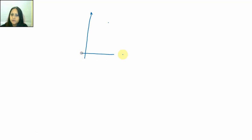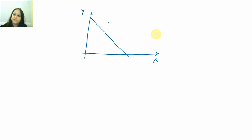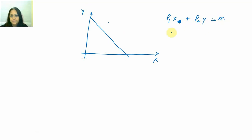So the x-axis has good x, the y-axis has good y, and this is my budget line. Its equation is p1x + p2y = m, which gives us m/p1 on the x-axis and m/p2 on the y-axis.